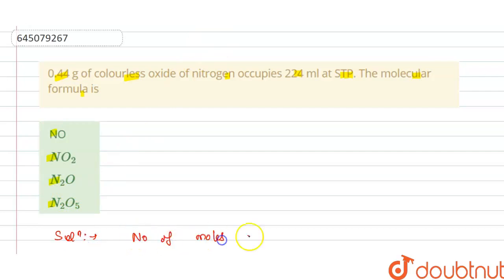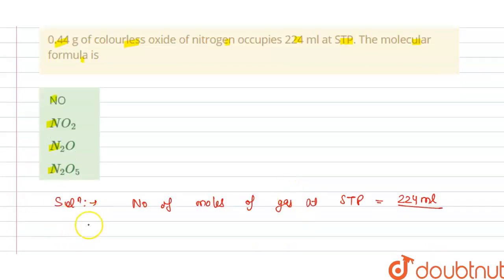We have the number of moles of gas at STP is given to us as 224 ml and we know that in one mole at STP is equals to 22400 ml. So these are the number of moles at STP